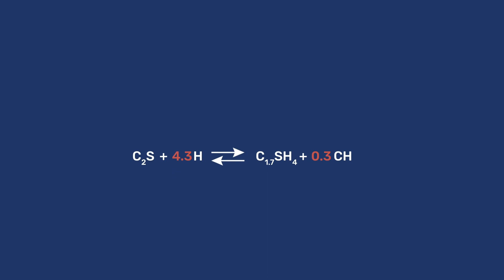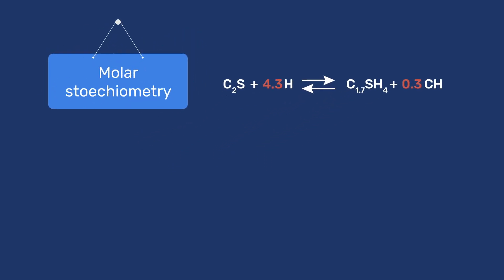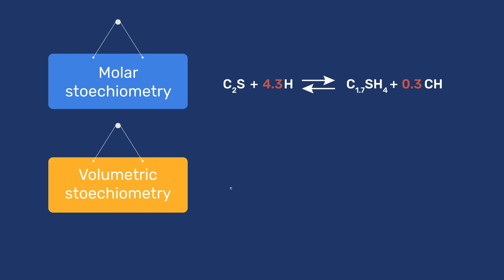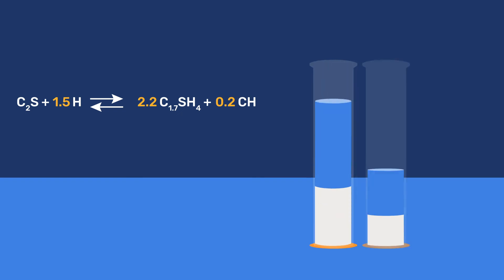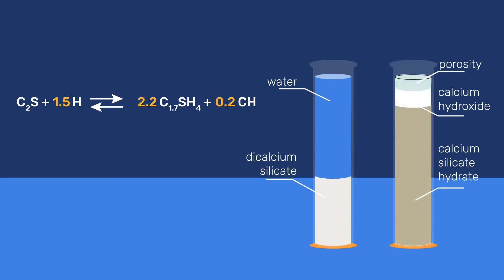Transforming the hydration of C2S from a molar stoichiometry to a volumetric one, the reaction becomes 1 volume of C2S plus 1.5 volumes of water give 2.2 volumes of C-S-H and 0.2 volumes of C-H. As for the pozzolanic reaction, the total volume decreases, in this case from a total of 2.5 to 2.4 units, giving a chemical shrinkage of 4.5 percent.